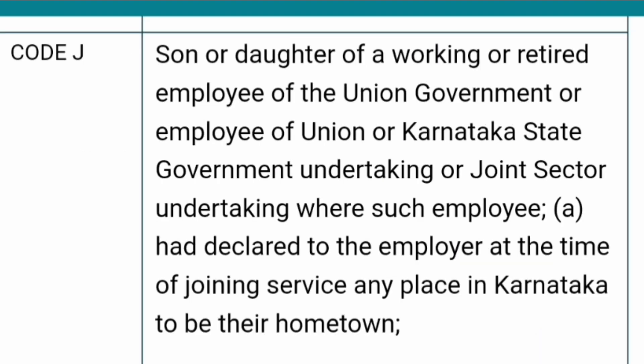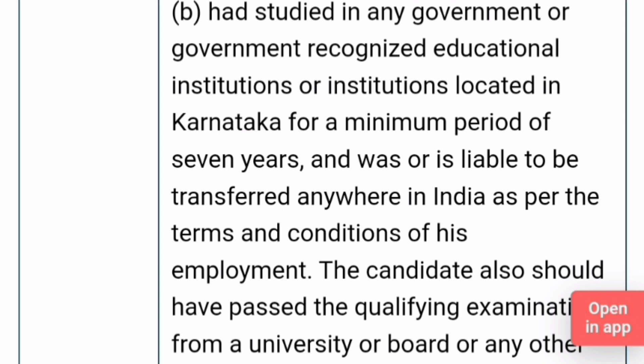Code J is for the son or daughter of a working or retired employee of the Union Government or Karnataka state government, or joint sector undertaking, where the employee declared a place in Karnataka as their hometown at the time of joining service. The son or daughter of such people can claim code J if they have studied in any government or government-recognized institution in Karnataka for a minimum period of seven years, and the parent was liable to be transferred anywhere in India.